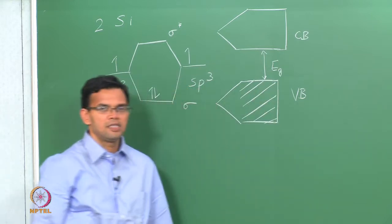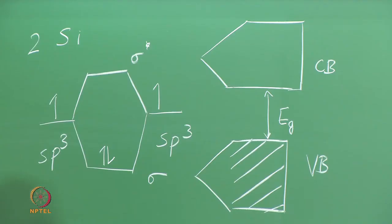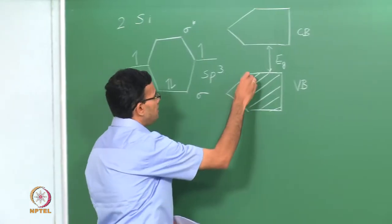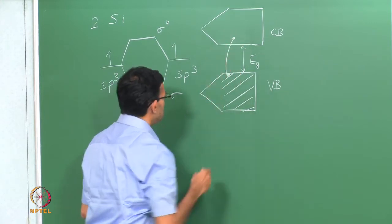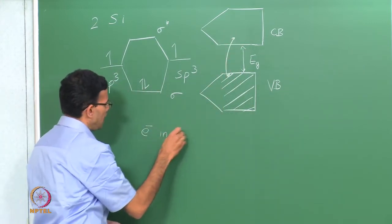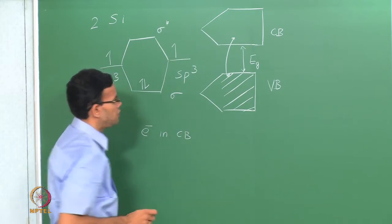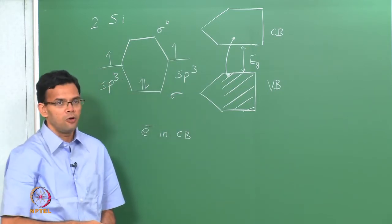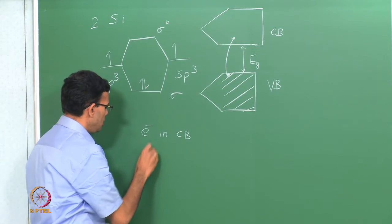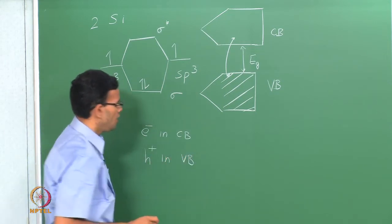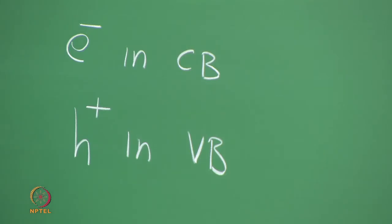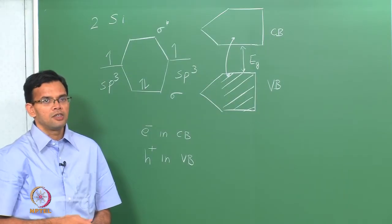Last class we also saw that at any temperature above 0 Kelvin, you will always have some electrons from the valence band going to the conduction band. So you will have electrons in the conduction band. The absence of an electron is called a hole, and we will have holes in the valence band. In the presence of an electric field, these electrons and holes can move and they cause conduction.